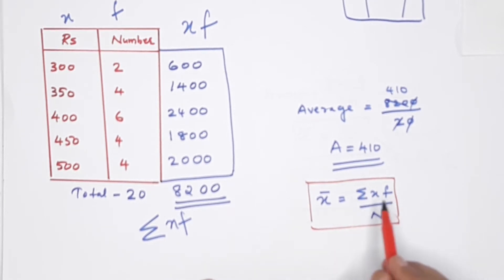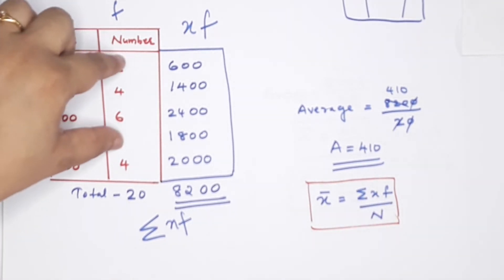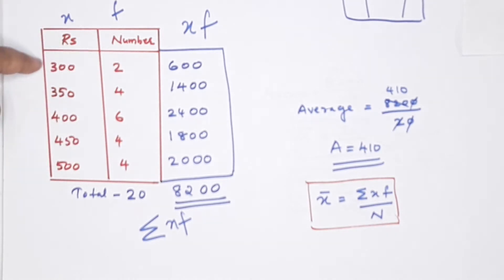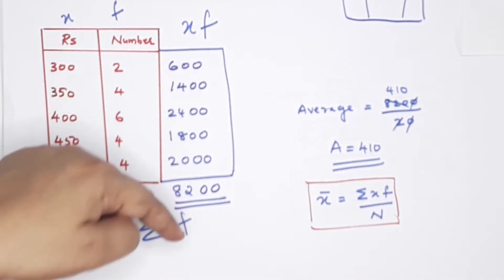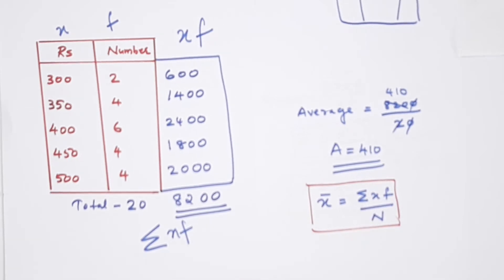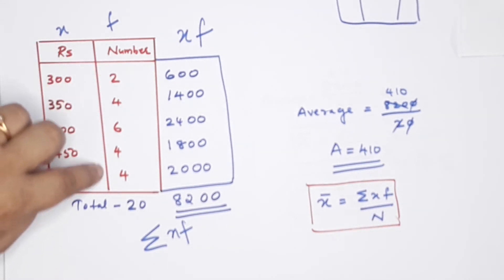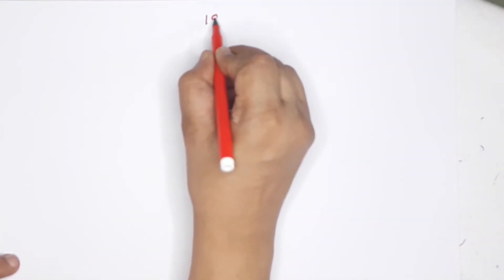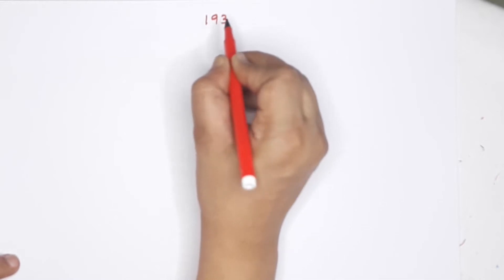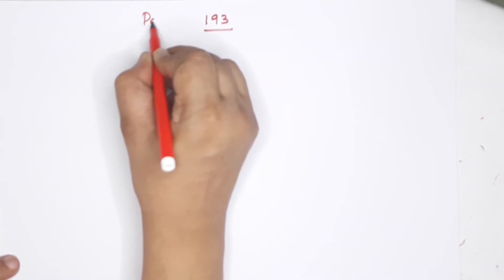x is equal to f - multiply and add. Add is equal to sigma, meaning sum, divided by n - the total number. Division. Page number 193, problems. That is the first question.